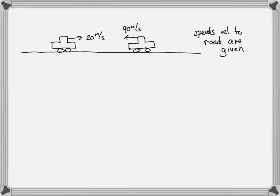Okay, here's a relative motion example. Let's say that we've got two cars which are traveling relative to the road at the speeds given. One is going 20 meters per second to the right, the other is going 90 meters per second to the left.